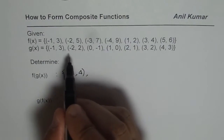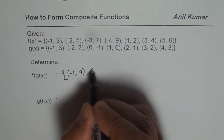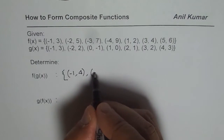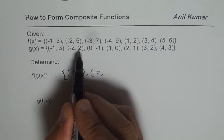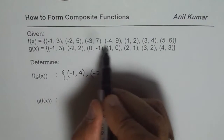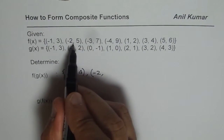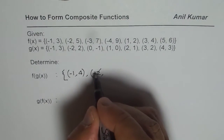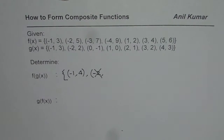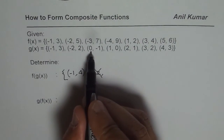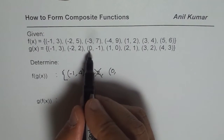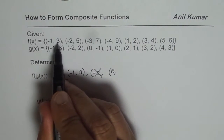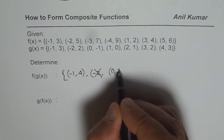For the second point, x equals minus 2: g of minus 2 is 2, but f of 2 is not there, so we cannot include minus 2 in the domain of f of g of x. Next, x equals 0: g of 0 is minus 1, and f of minus 1 is 3, so 3 is the output.